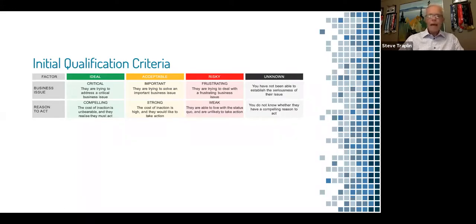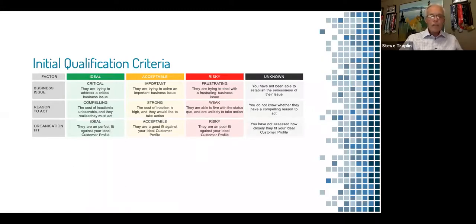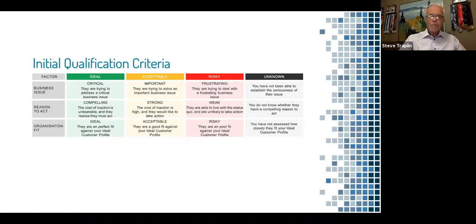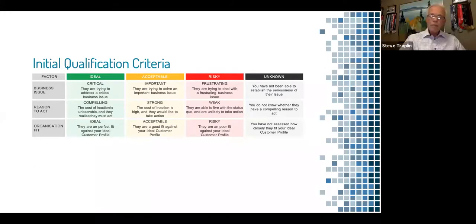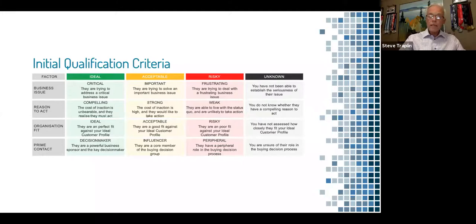On the factor of business issue, you ask the question - is this critical based on what you know? Is it important? Is it just something that's frustrating to them? Do they have a reason to act? Is there something really compelling? And we look at the organization. Do they match with what my marketing plan says is my ideal customer profile?